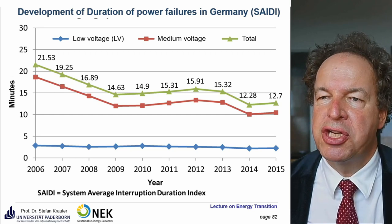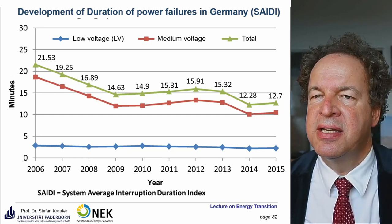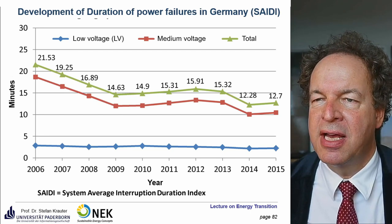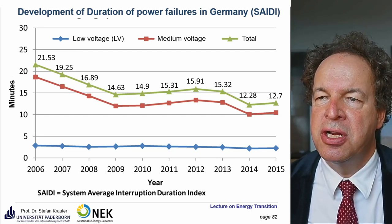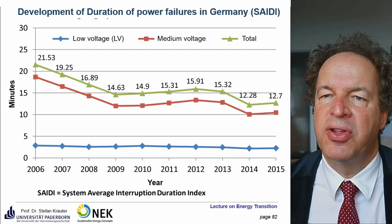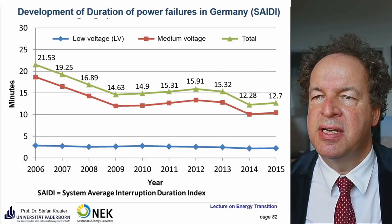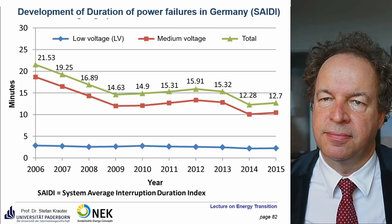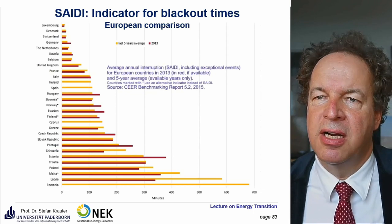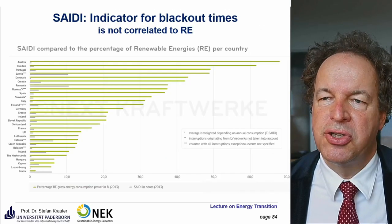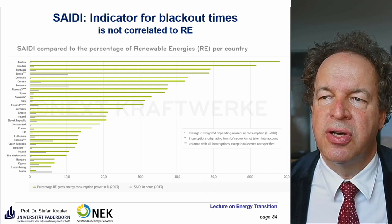This is shown by the SAIDI value — System Average Interruption Duration Index. The higher the index, the more failures occur. In Germany, SAIDI has been going down: from 21.43 minutes in 2006 to about half that in 2015, a 50% reduction in power failure duration. Contrary to what many claim, the energy transition and use of renewables has not made the grid less stable — the opposite is true. Many other countries have much higher blackout times.